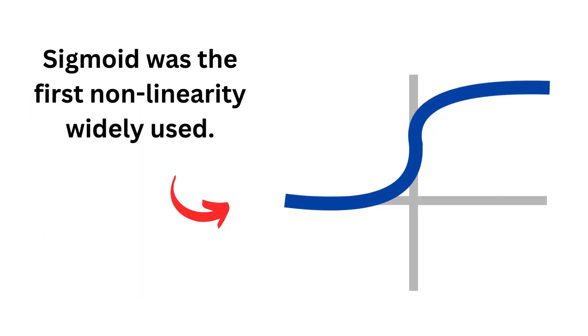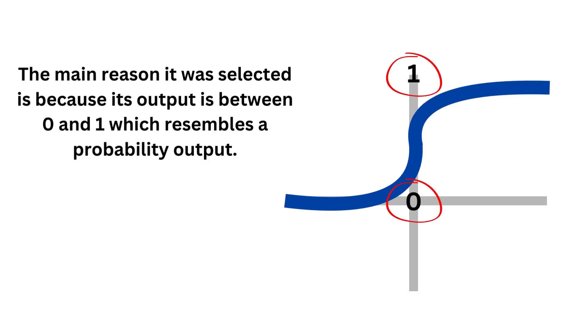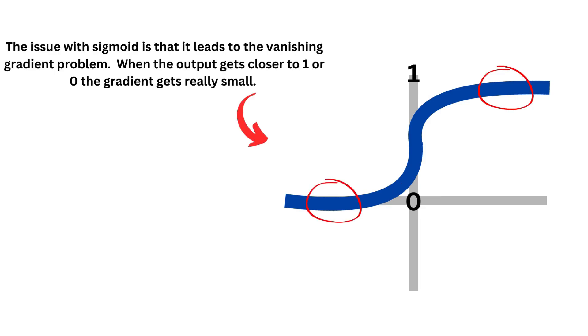Sigmoid was the first non-linearity widely used. The main reason it was selected is because its output is between 0 and 1, which resembles a probability output. The issue with Sigmoid is that it leads to the vanishing gradient problem.